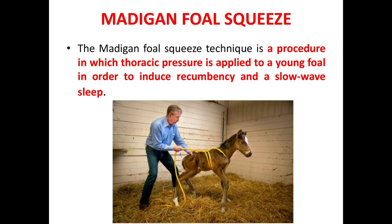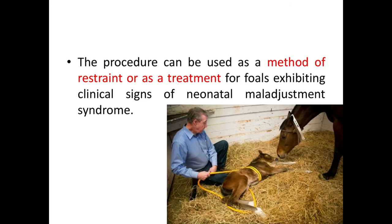There is another procedure known as the Madigan fall squeeze. The Madigan fall squeeze technique is a procedure in which thoracic pressure is applied to a young fall in order to induce recumbency and a slow wave sleep. This picture shows the way the fall is restrained in order to induce recumbency. This procedure can be used as a method of restraint or as a treatment for falls exhibiting clinical signs of neonatal maladjustment syndrome.